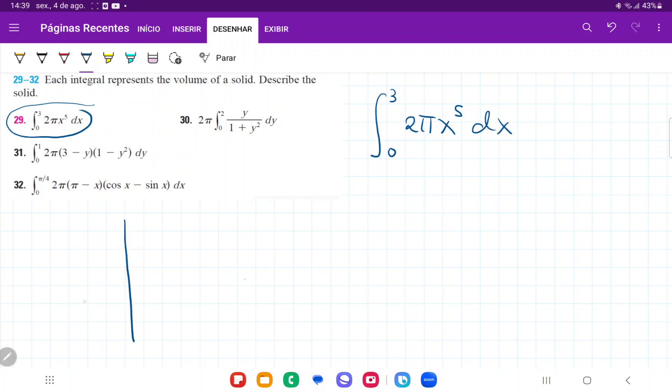So as we've been seeing when we're doing the shell method, if I have a curve like so, and this curve goes from A to B, and we revolve it about the y-axis using the shell method, so when we revolve it, we're going to end up with these cylinders here. And these cylinders, when we open them up,